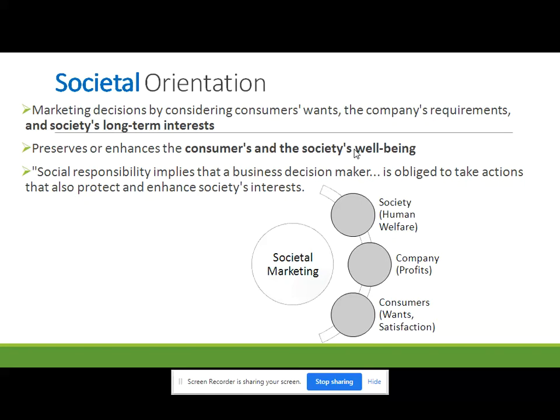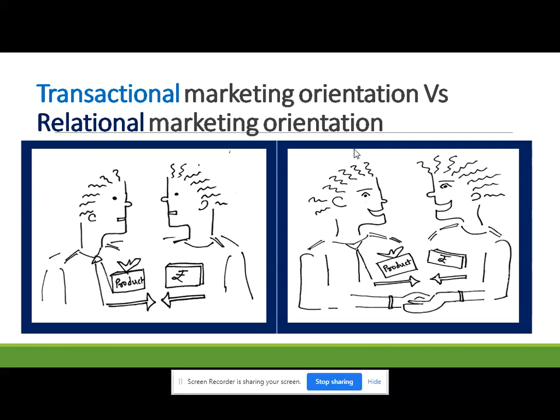For example, companies investing in e-cars or e-bikes can be an example of the societal marketing approach. Similarly, if Infosys or IBM is selling products and services but also helping NGOs and promoting or helping needy people to learn — those are also examples of societal orientation. Now, another orientation is transactional orientation, and we will compare it with relationship marketing orientation.